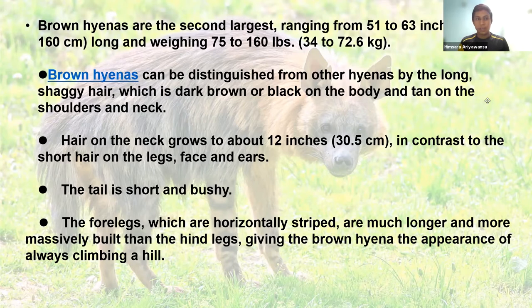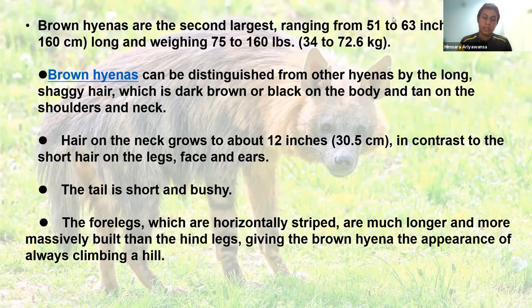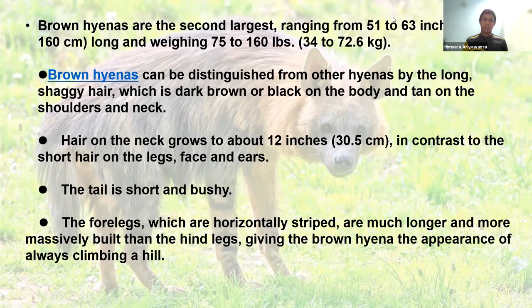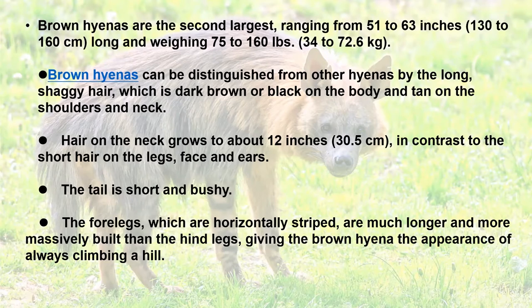Brown hyenas are the second largest, ranging from 51 to 63 inches long and weighing 75 to 160 pounds. They can be distinguished from other hyenas by their long shaggy hair, which is dark brown or black on the body and tan on the shoulders and neck.